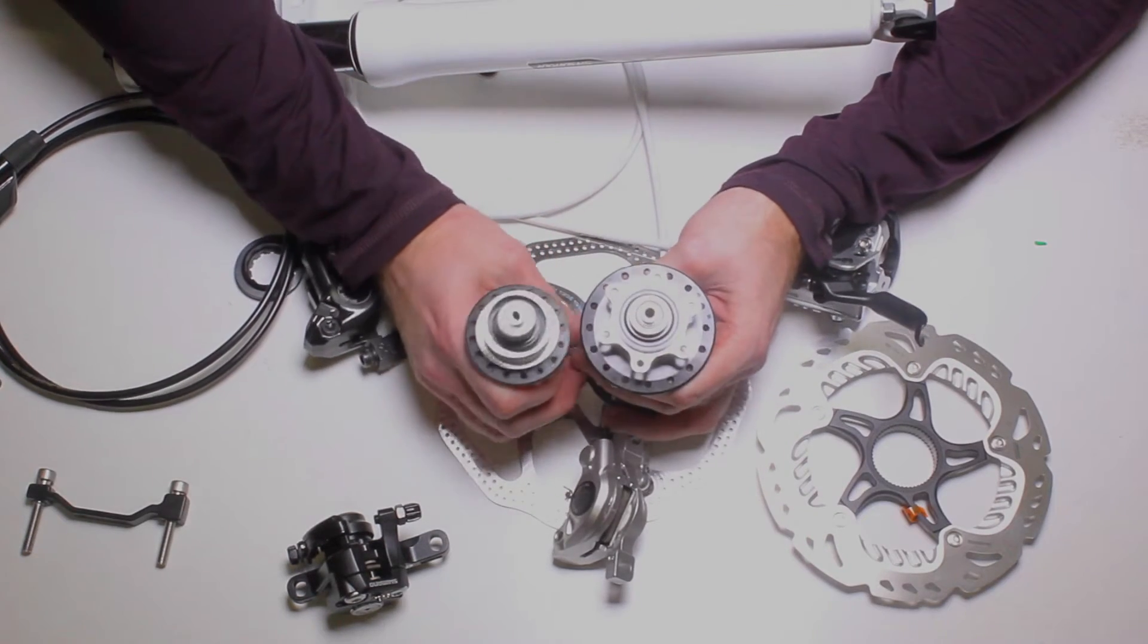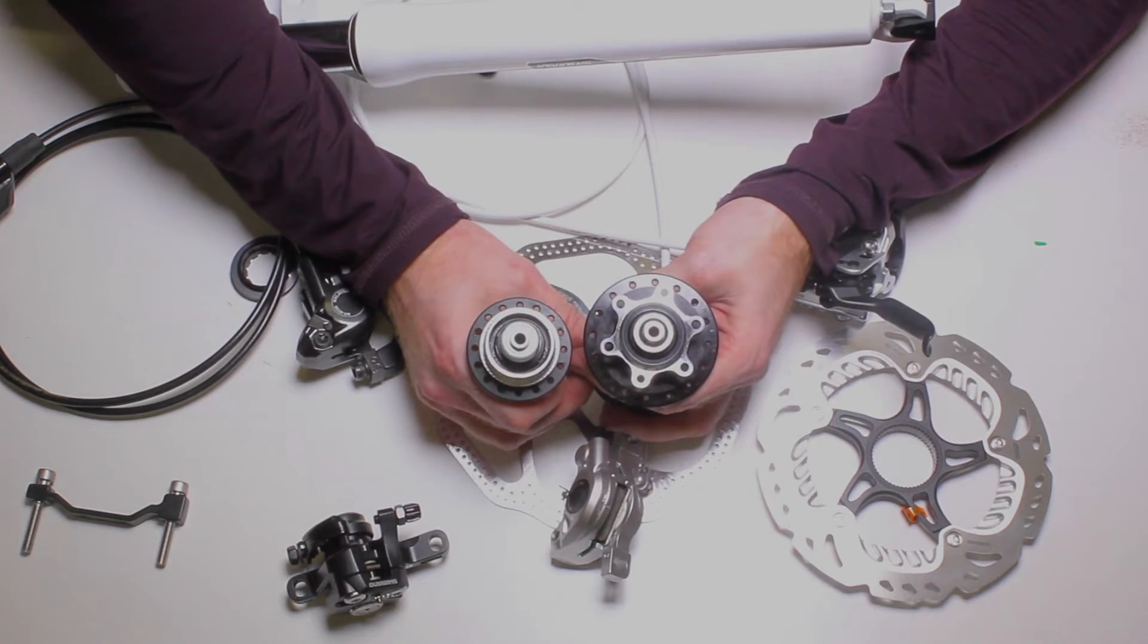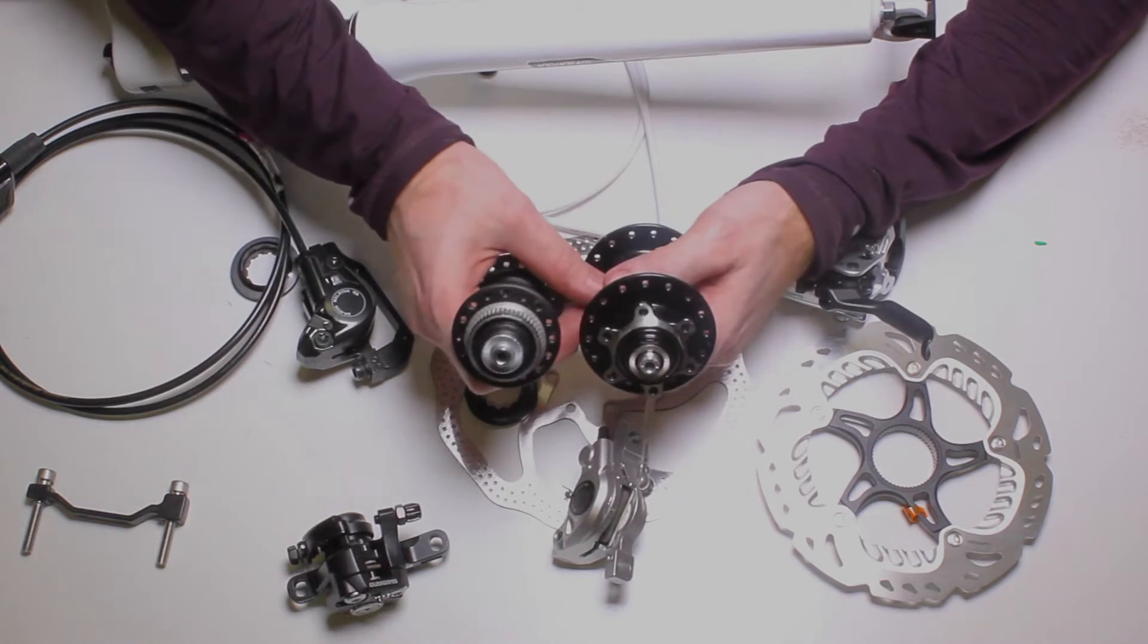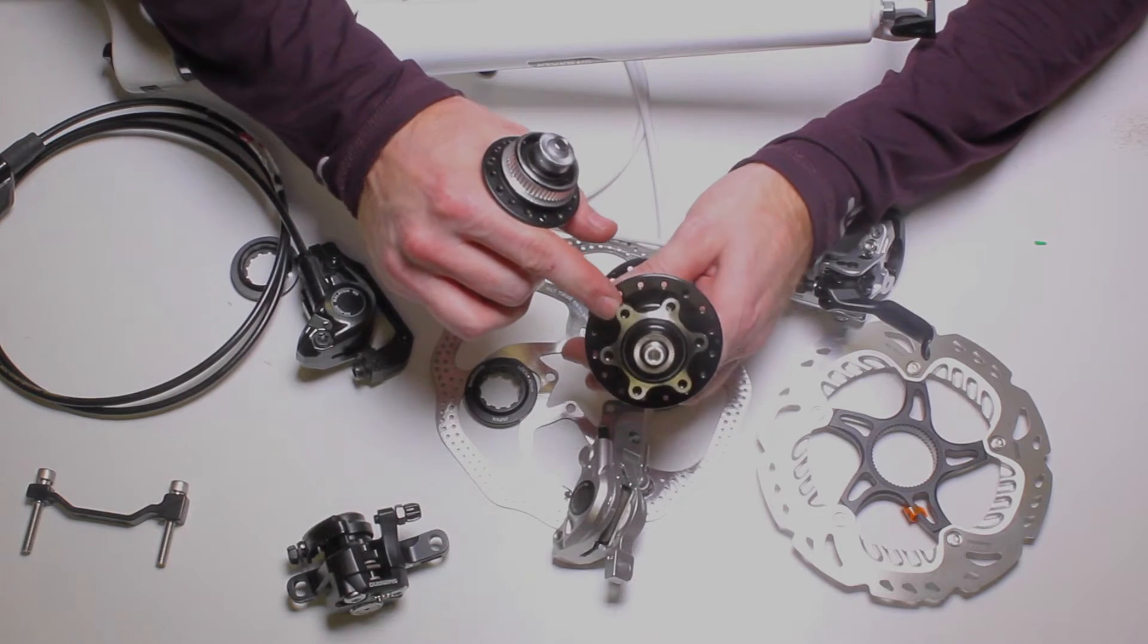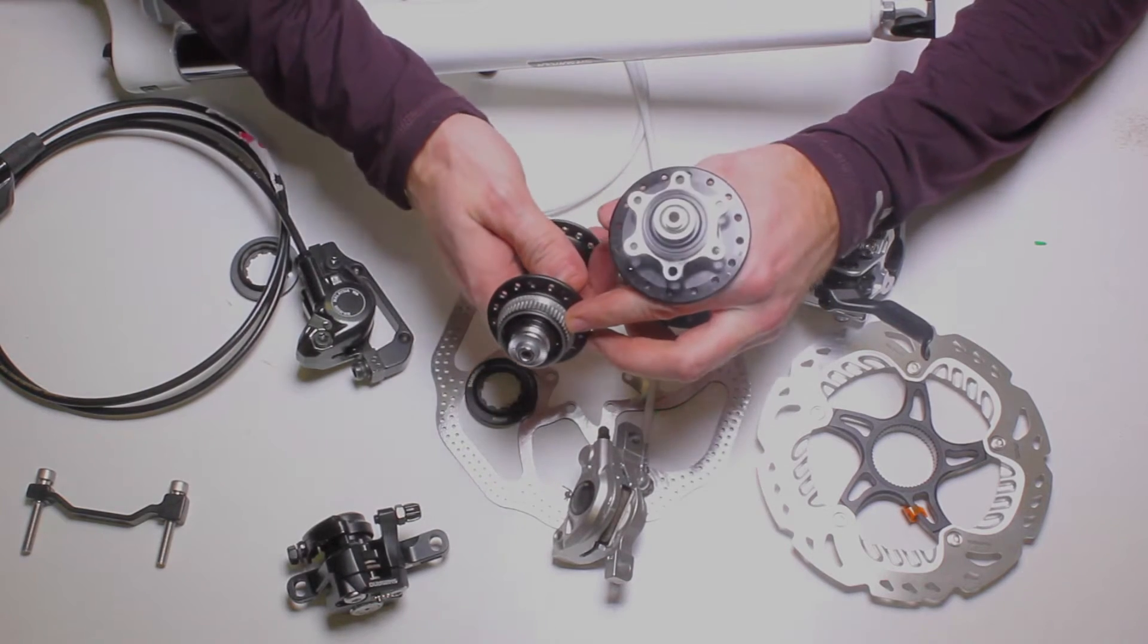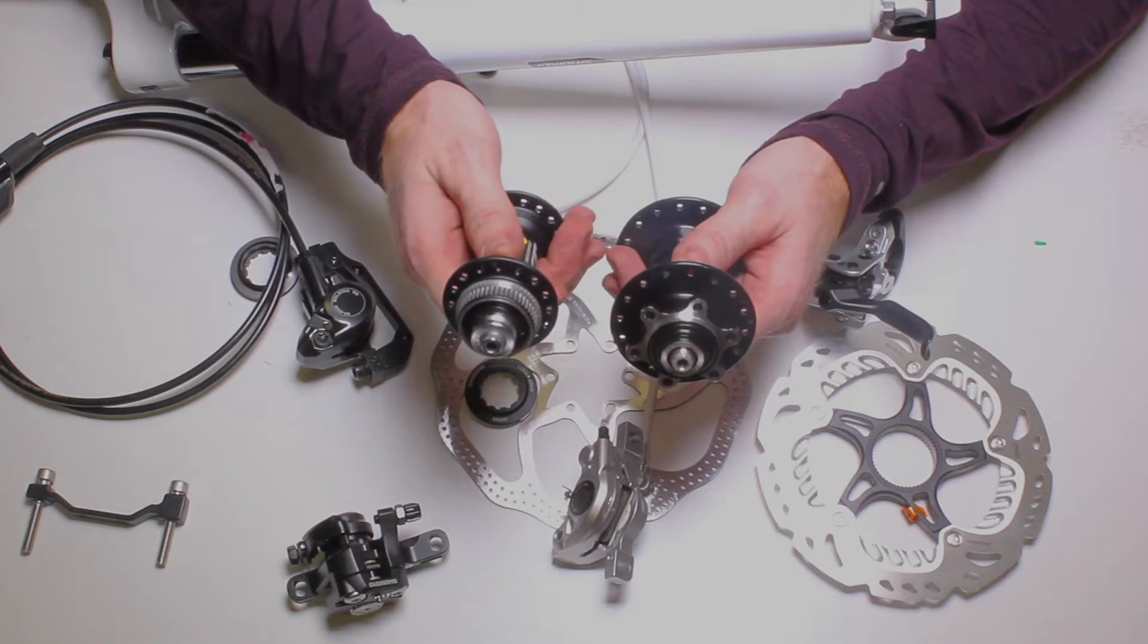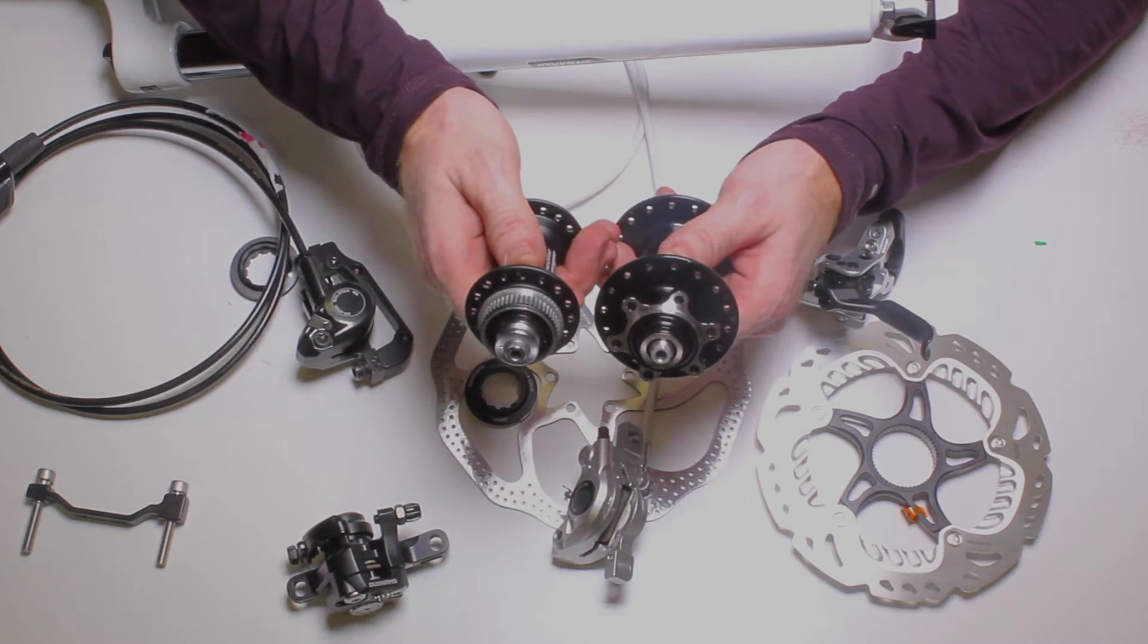When we're talking about compatibility with disc brakes, you must have these features on your hubs. You must have something that will accept a rotor. This happens to be a six bolt pattern. This one happens to be a center lock pattern. You must have one of these two different kinds in order for disc brakes to work.